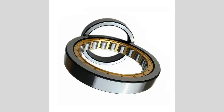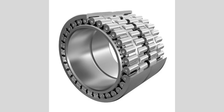They can be found in applications such as electric motors, gearboxes, and industrial equipment. Their ability to handle high speeds and loads makes them suitable for demanding environments. These bearings are available in different configurations, such as single-row, double-row, and multi-row designs, each tailored to specific load and space requirements.